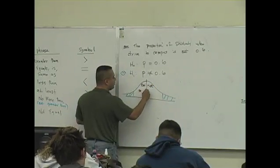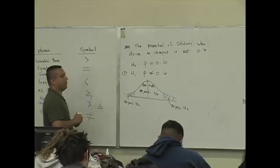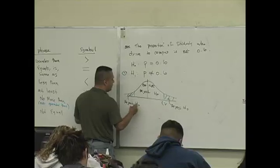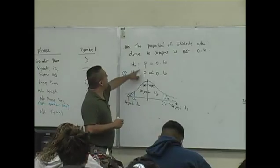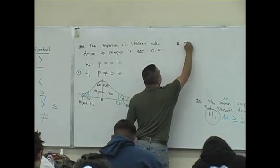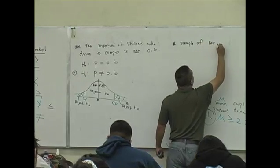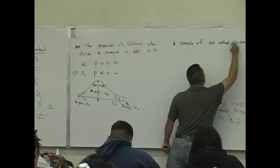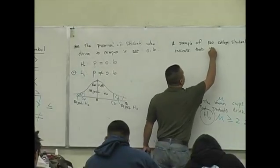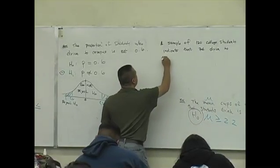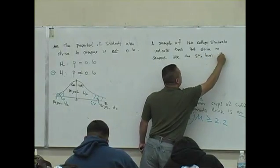This is the do not reject the null region. This is the reject the null region. Two-tailed test. The hardest part is to determine your critical values. This is the setup. A sample of 120 college students indicates that 74 drive to campus. So we're going to use the 5% level of significance to test this claim.